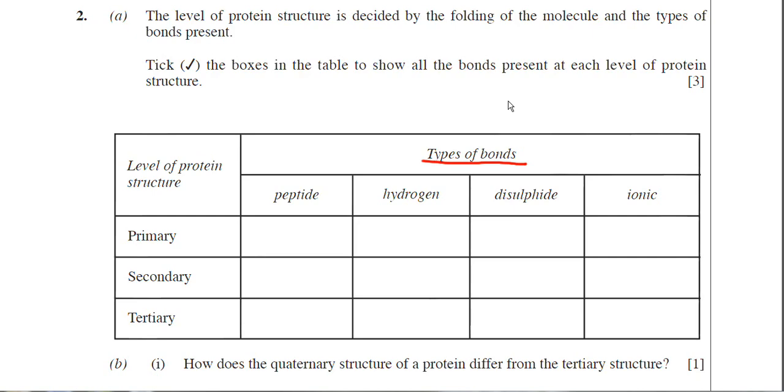But for this question, part A, we're just looking at primary, secondary and tertiary structures. So we're looking here at what bond would be found in the primary structure. Now just to remind you, the primary structure is just the type and sequence of amino acids, and they are actually joined together via a bond and it's that bond that we need to know the name of and it is the peptide bond. So we can actually put a tick in there. I'm using an oblique sign instead of a tick, but in the exam you must put a tick there. There are actually no other bonds present in the primary structure. So that's the first row done.